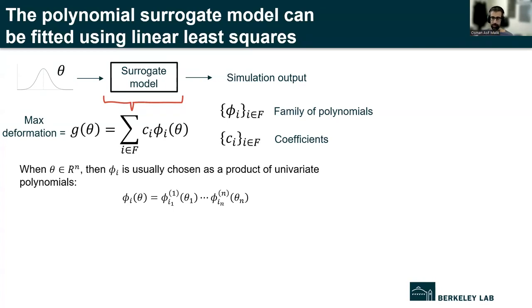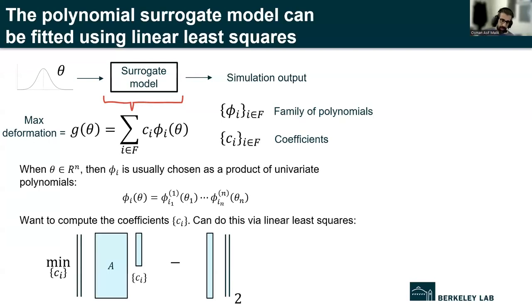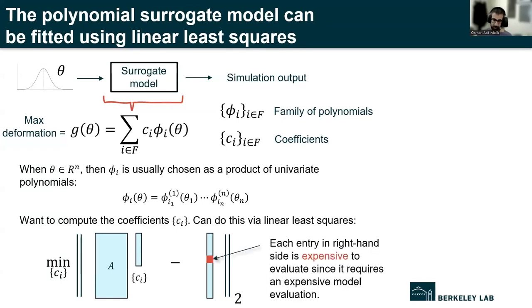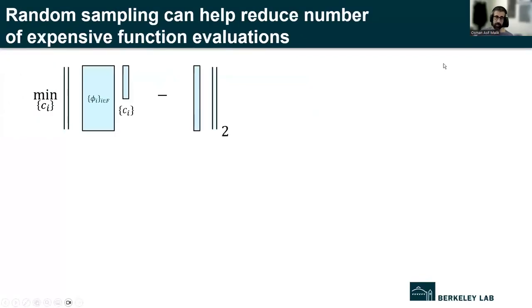So once we've decided on a family of polynomials, the problem becomes one of determining the coefficients. And this is a linear least squares problem, as it turns out, where the design matrix A comes from evaluating the polynomials at various points. And then c_i, the vector containing the c_i's, is the one we're trying to solve for. When we set up this problem, we need to also know the right-hand side vector, which is here highlighted on the right side. And the problem that we can run into here is that each entry in this right-hand side vector requires an expensive model evaluation, which is what we wanted to avoid. So how can we sort of circumvent this problem of having to evaluate the expensive model many times?